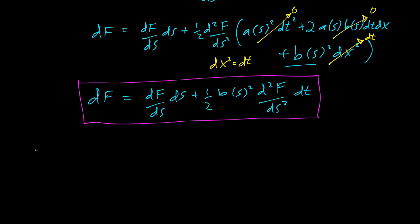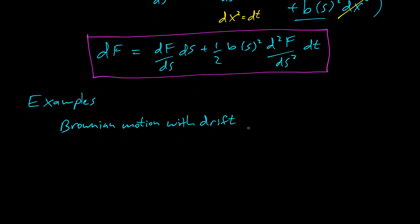Now let's do some examples. How does this actually connect to finance? Our first example is Brownian motion with drift. The formula is ds equals μ dt plus σ dx. Brownian motion with drift, not too surprising.